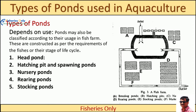Ponds may also be classified according to their uses in the fish farm. These are constructed as per the requirement of the fish or their life cycle stages. The layout includes: a head pond, hatching pond, nursery pond, rearing pond, stocking pond, and marketing pond. Based on use, we classify them as head pond, hatching pit or spawning pond, nursery pond, rearing pond, and stocking pond.